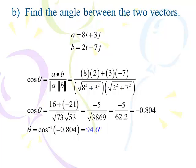That's how we use the dot product to find the angle between any two vectors. We put this formula on the formula sheet: dot product divided by the product of their magnitudes, then take the inverse cosine.